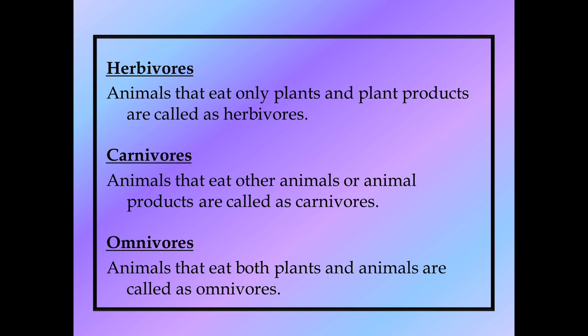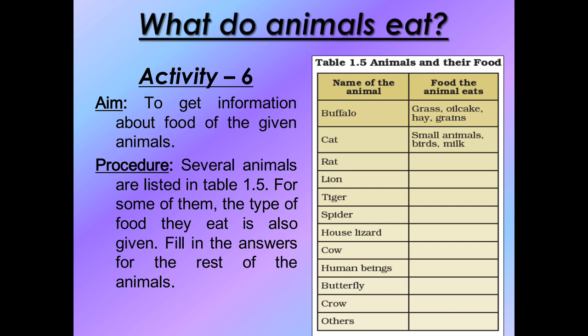Now we have to apply this theory with examples - we need to know which animals eat which food. To discuss that, we will perform Activity 6 from your textbook: What Do Animals Eat? The aim is to get information about the food of the given animals listed in Table 1.5. The procedure is: several animals are listed in Table 1.5; for some of them the type of food they eat is already given as examples. Fill in the answers for the rest through discussion.